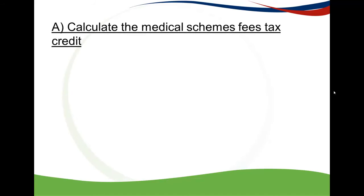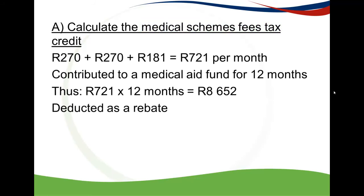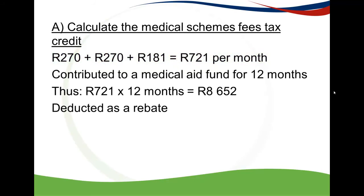To start, we need to calculate the medical schemes fees tax credit — Part A. This is a fixed amount: 270 Rand for the first two people on the medical aid, and 181 Rand thereafter. So it's 270 for Rose, 270 for her husband, and 181 for her child, coming to 721 Rand per month. Because she contributed to the medical aid fund for 12 months, you multiply by 12.